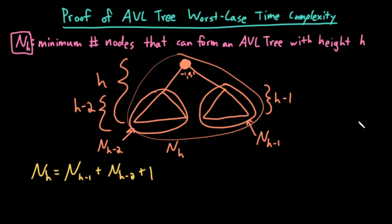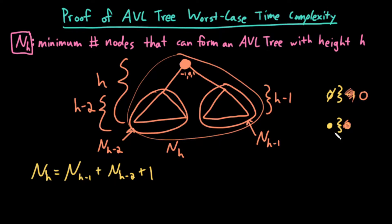Originally I defined the height of a binary search tree as the number of edges along the height, but temporarily for this specific proof, I'm going to increase this number by 1. So in my prior definition, a one-node tree would have a height of 0, and an empty tree would have a height of negative 1. But for this proof, let's say an empty tree has a height of 0, and a one-node tree has a height of 1 — we're counting the number of nodes instead of edges. It's equivalent in terms of big O time complexity, but it makes the proof much simpler.